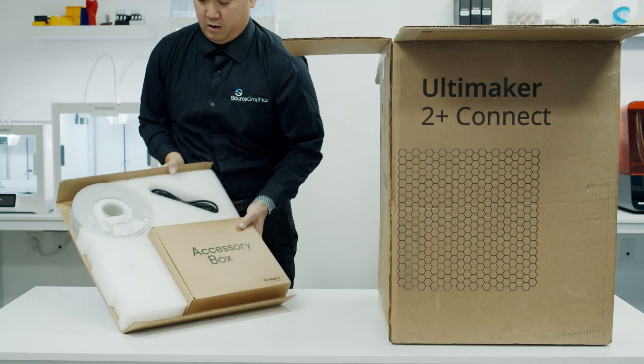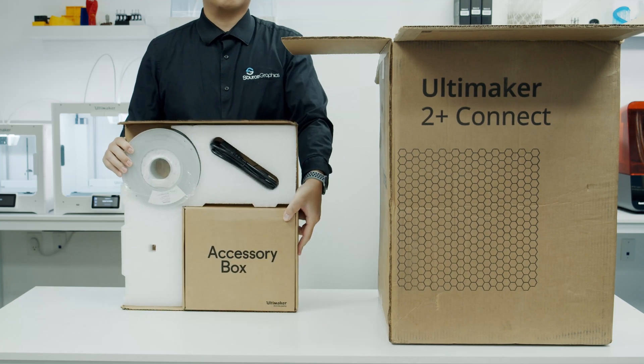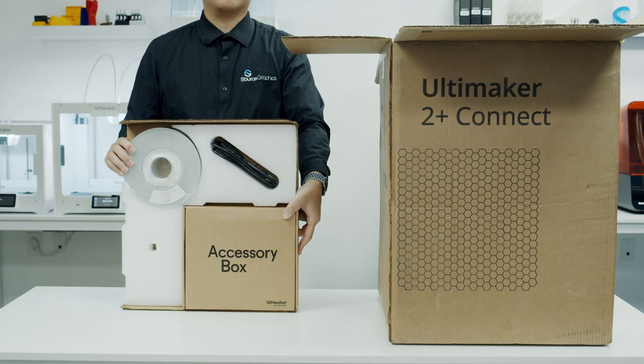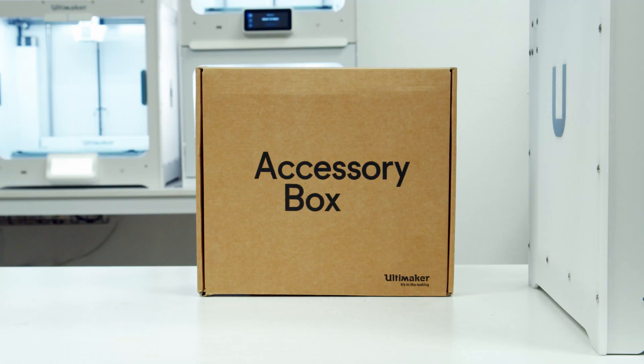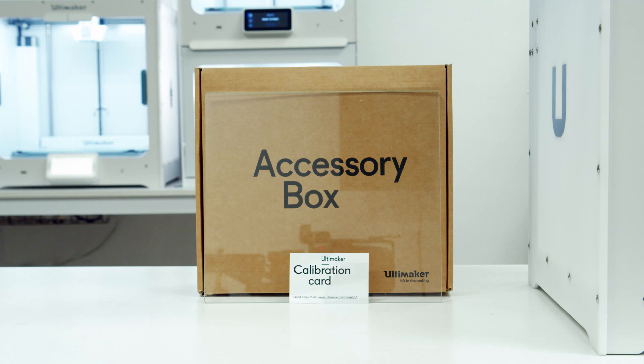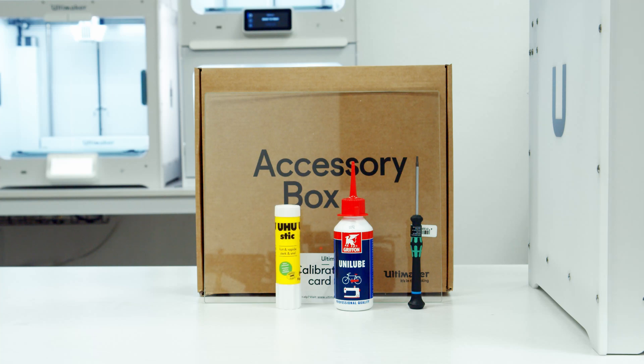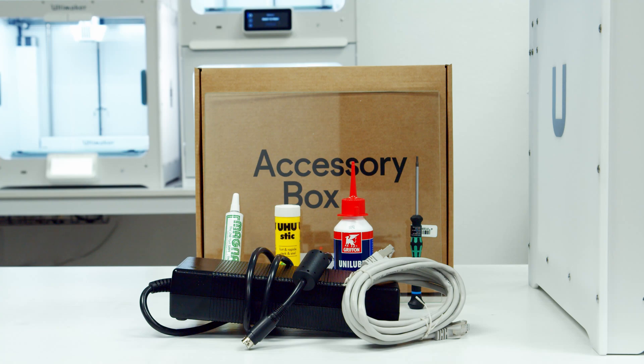First, you have a spool of filament, power cord, and an accessory box that holds small accessories. Inside the accessory box you have a build plate, a calibration card, a screwdriver, UniLube lubricant, a glue stick, MagniLube grease, power supply, and an Ethernet cable.